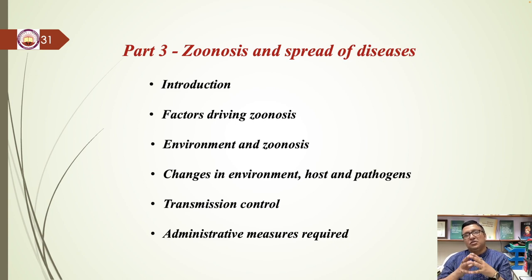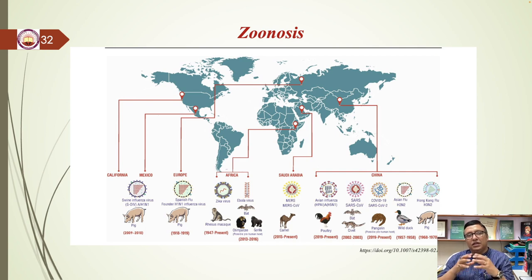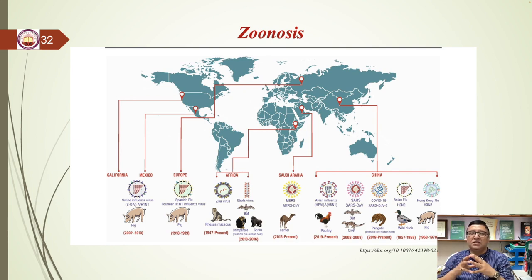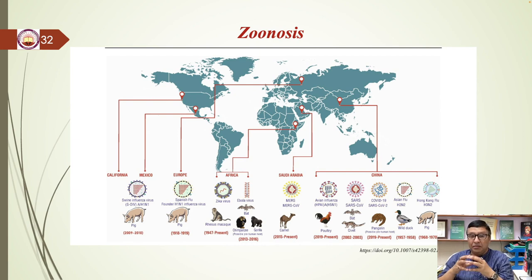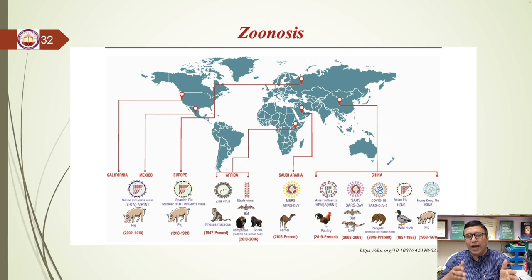Welcome to the third part of my talk. As promised, we'll talk more about zoonosis and its spread. The 20th century saw extraordinary ecological change, with several decreases in natural habitat and biodiversity, as well as equally substantial increases in people and domestic animals. Never before have there been so many chances for infections to spread from wild and domestic animals to humans via the biophysical environment, resulting in zoonotic illness.